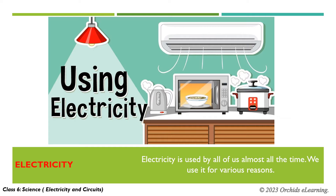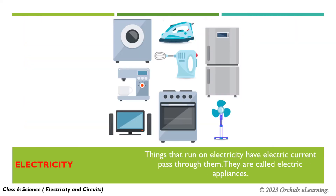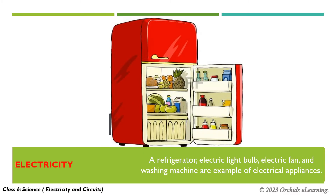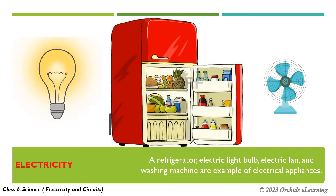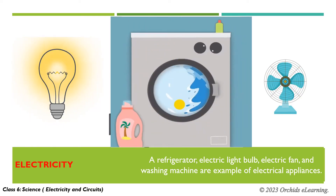Electricity is used by all of us almost all the time. We use it for various reasons. Things that run on electricity have electric current pass through them. They are called electric appliances. A refrigerator, electric light bulb, electric fan, and washing machine are examples of electrical appliances.